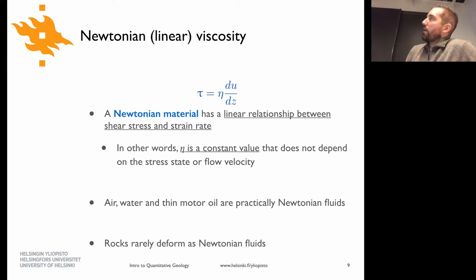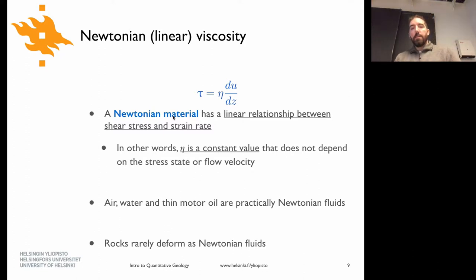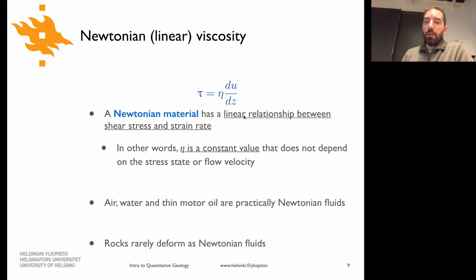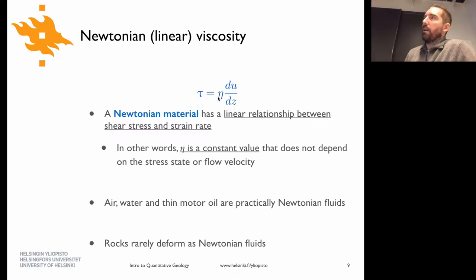To get started talking about different types of behaviors of viscous fluids, we start with the simplest: a Newtonian material. That's governed by an equation with a linear relationship between stress tau and strain rate du/dz. Viscosity is just a constant value and doesn't change as a function of the stress state or flow velocity.